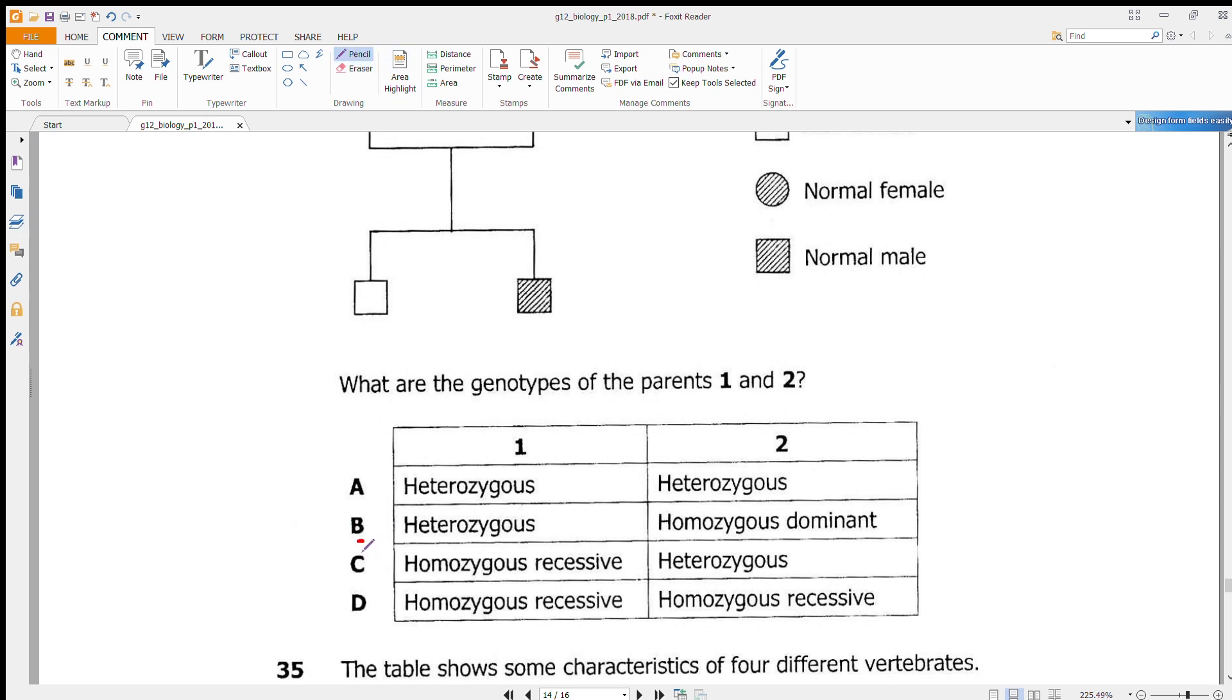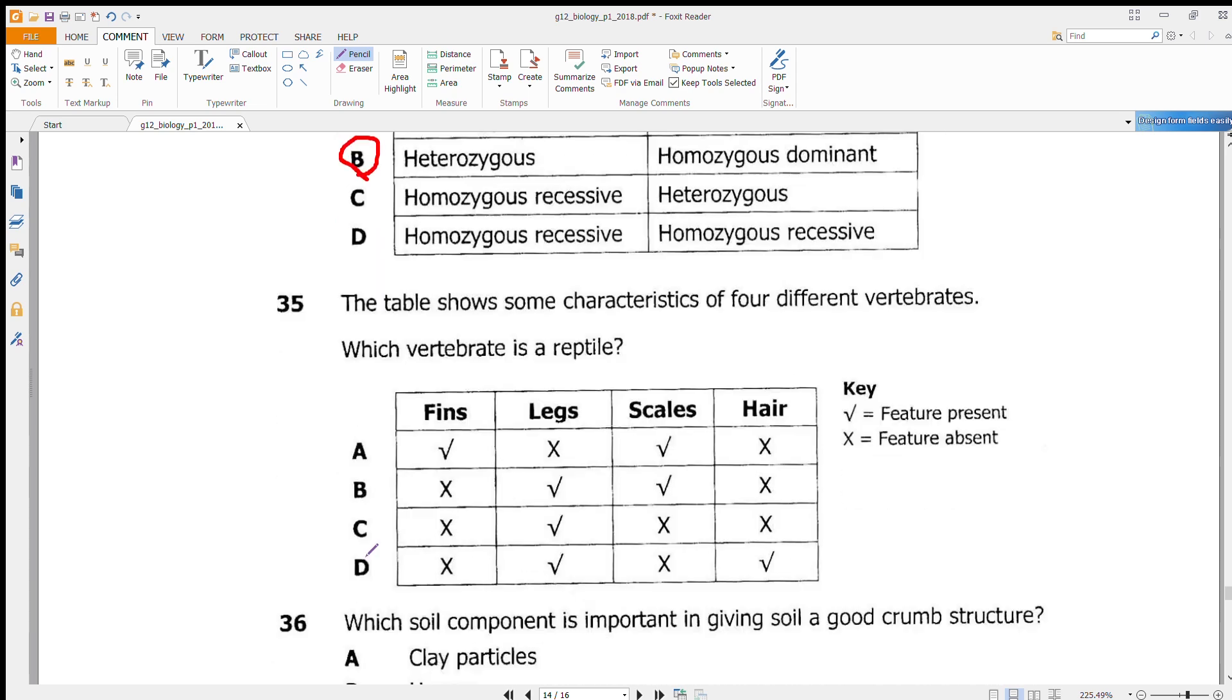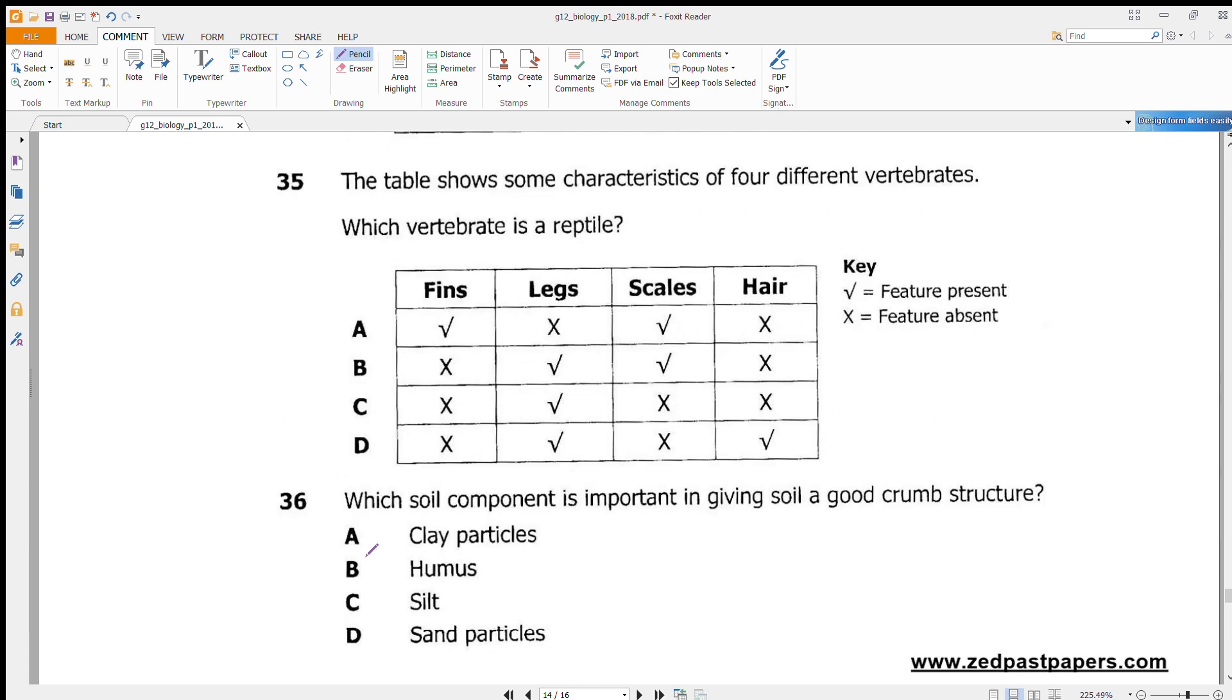Question 35: The table shows some characteristics of different vertebrae. Which vertebrae is a reptile? We're talking about lizards and snakes. We know that lizards don't have hair, lizards have scales. Lizards have legs and they don't have fins, so answer here should be B.